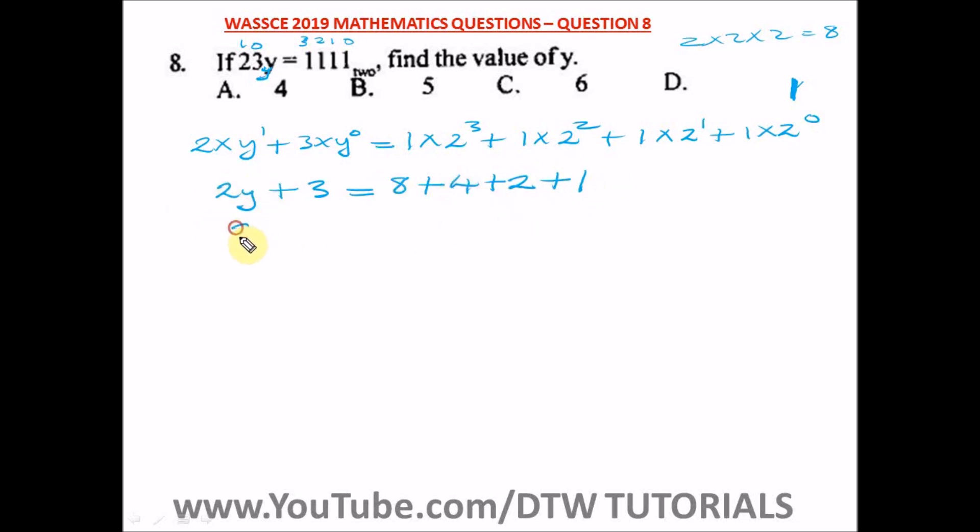So from here, what do we have? We have 2y plus 3. When we add this up, we have 1 plus 2, that is 3, plus 4, that is 7, and 7 plus 8 will give us 15. Let's look for 2y. We'll take 3 to this side. We have 2y is equal to 15 minus 3. That will give us 12.